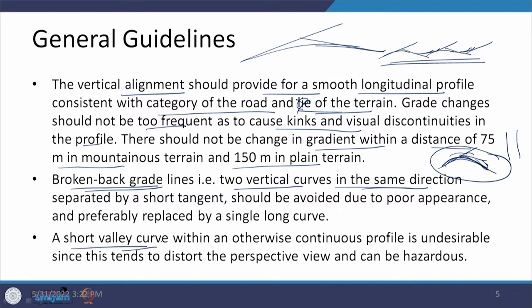A short valley curve within an otherwise continuous profile is undesirable. If you have a continuous profile going on and a small curve is provided and then the profile continues, or a small curve is provided and then it goes up — in any of these cases, if there is a possibility to omit such things, that is good both in terms of perspective views and safety, as hazardous locations may cause a safety impact.